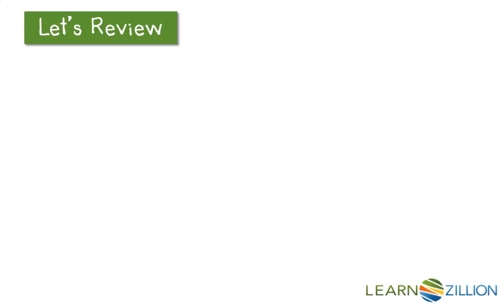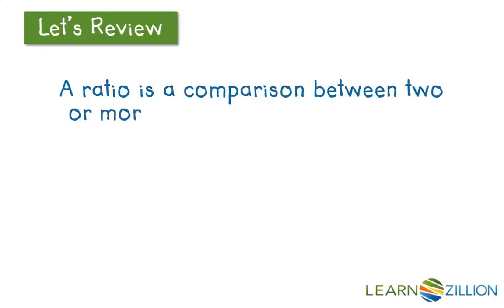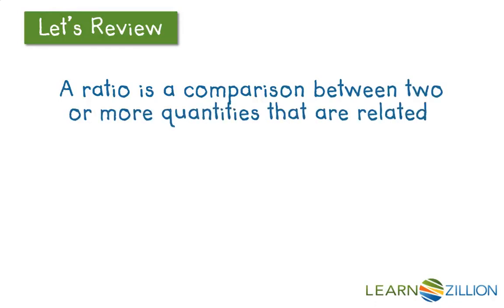What is a ratio? A ratio is a comparison between two or more quantities that are related. Remember that ratios can be written three different ways numerically: 3 to 5, 3:5, or 3/5.